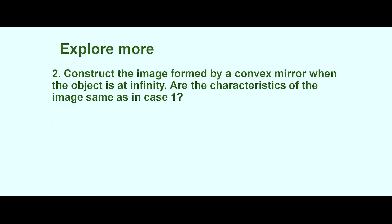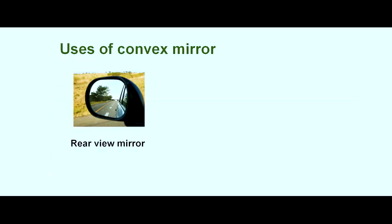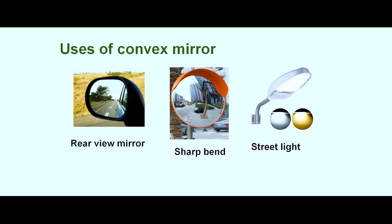You can try constructing the image for a convex mirror when the object is at infinity and compare the characteristics with case one. The uses of a convex mirror include: it is used as a rear-view mirror in vehicles; it is also used to view incoming vehicles or traffic at sharp bends; and it is used as a reflector in street lights.